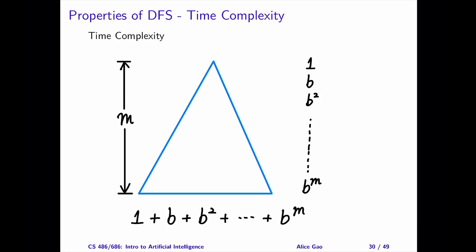And the bottom level has at most B to the power of M nodes. The size of the bottom level is the dominating term in the summation. Therefore,